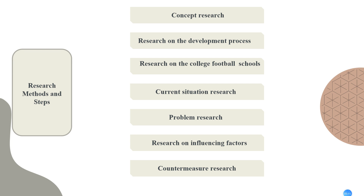The sixth step is research on influencing factors: through data reflected in the questionnaire survey, the factors hindering the development of college football are identified. The seventh and last step is countermeasures research: through literature sorting, interviews, and investigation, this paper puts forward corresponding countermeasures to the problems existing in the development of college football. Thank you.